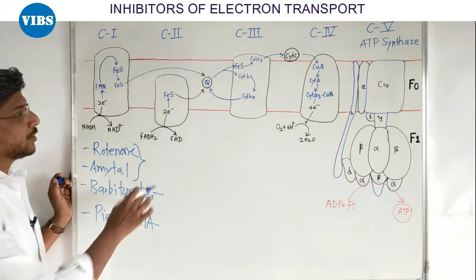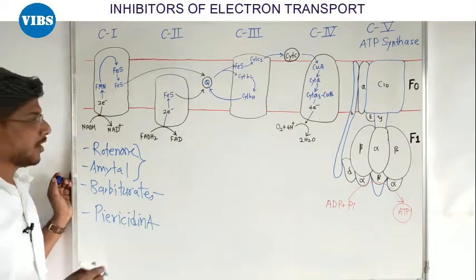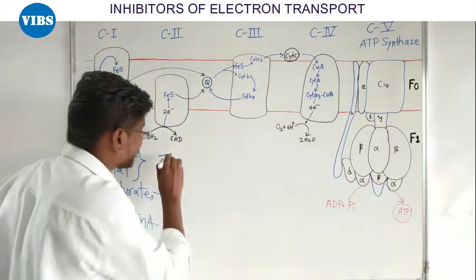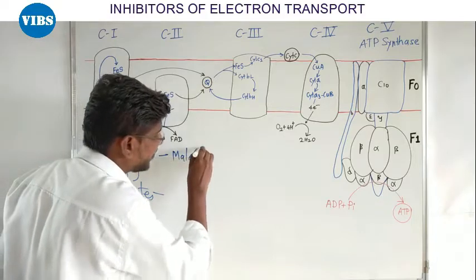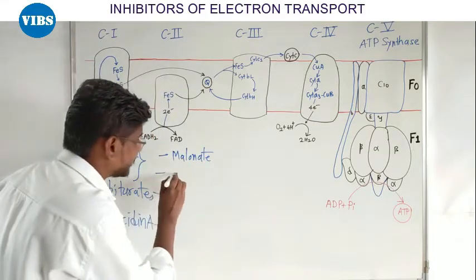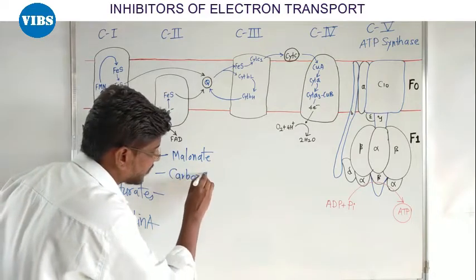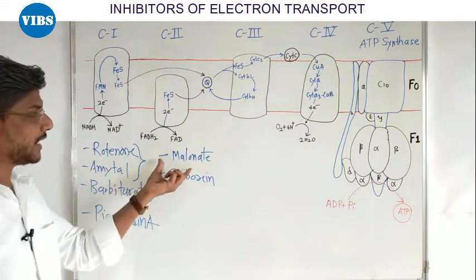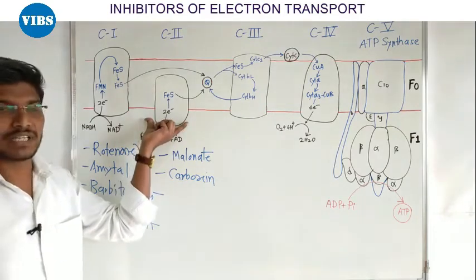Complex II hai jiska naam hai succinate dehydrogenase. Complex II ke inhibitors hain: Malonate and Carboxin. Malonate and Carboxin kya karta hai — complex II ko inhibit karta hai.